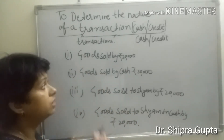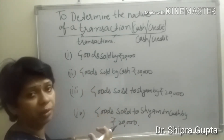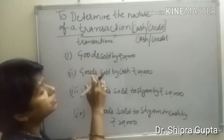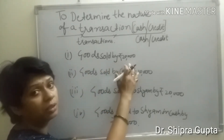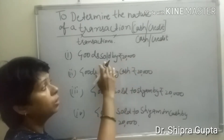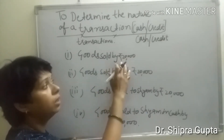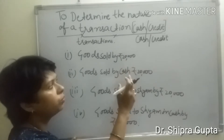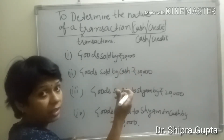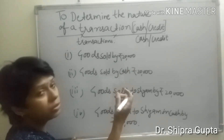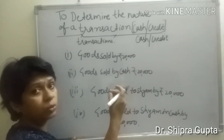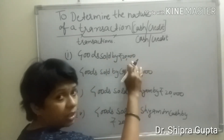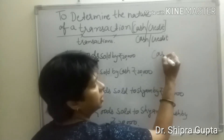In these four transactions, they are looking like the same nature, but actually they are different from each other. In the first transaction — goods sold by rupees 20,000 — it is not clear to whom the goods were sold. So we have assumed neither cash nor a person is mentioned, and we treat it as a cash transaction.